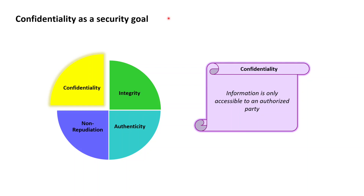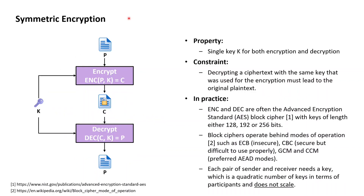The first security goal of cryptography we have a closer look at is confidentiality, which is the security goal demanding that information is only accessible to authorized parties. The primary cryptographic concept serving this security goal is encryption, and the first major approach to encryption is symmetric encryption. The characteristic property of a symmetric encryption system is that a single key K is used for both the encryption operation as well as the decryption operation.